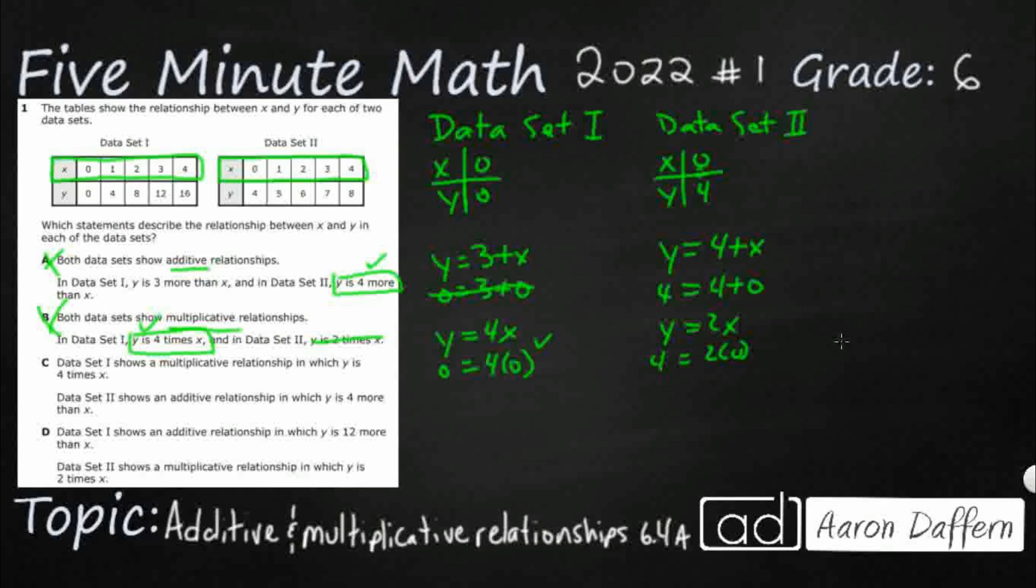I'm just going to kind of draw a line so we can keep track of where we're working. Data set 1 shows multiplicative relationship in which y is 4x. y equals 4x is what we just did. So, y 0 equals 4 times 0. That looks good. Data set 2 shows an additive relationship when y is 4 more than x. That's the first one. y equals 4 plus x. So, 4 equals 4 plus x. I think so.